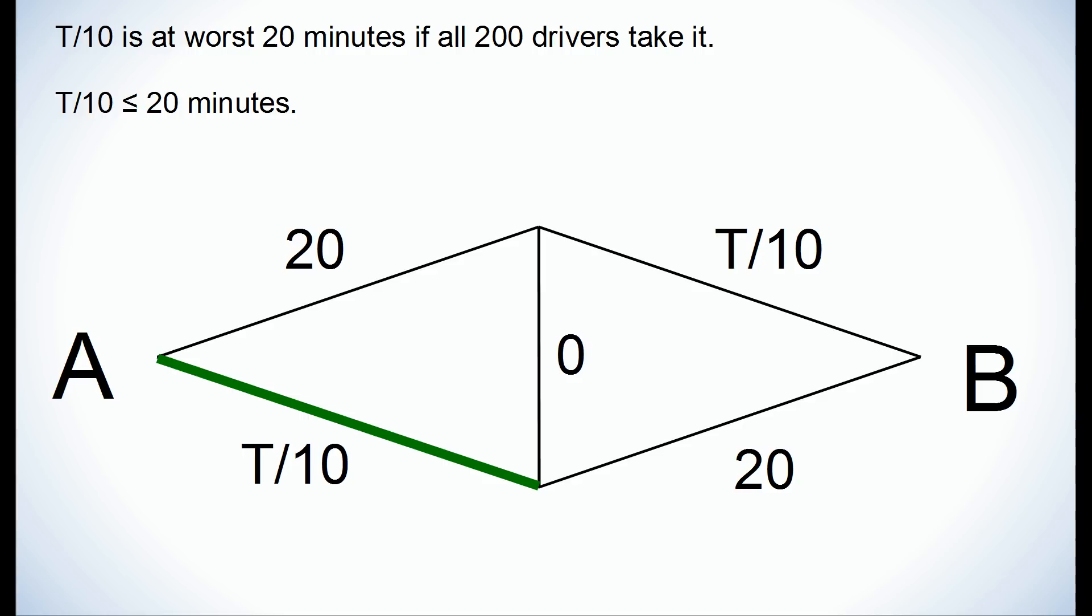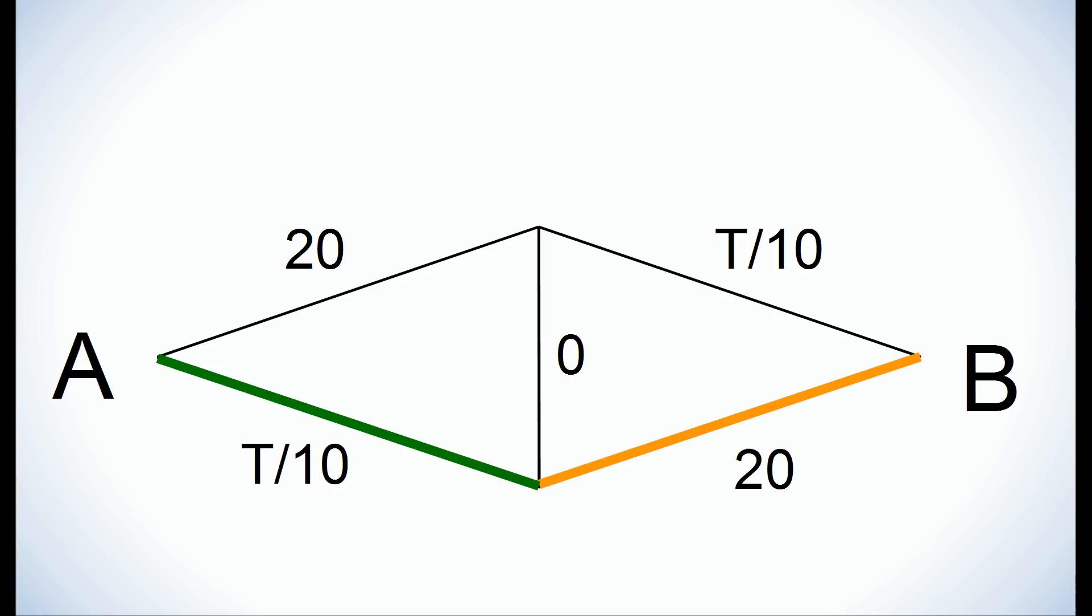At the halfway point, it's the same decision. One option is the southern route, which takes 20 minutes, and the other option is to switch to the northern route, which takes T over 10 minutes in total.